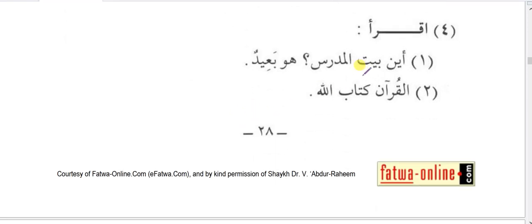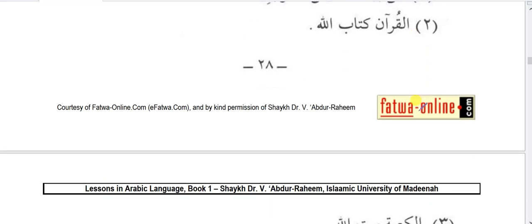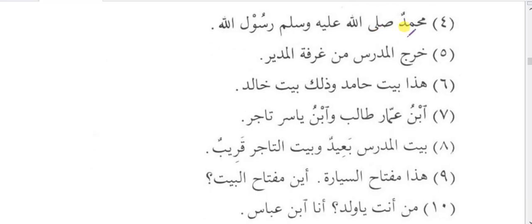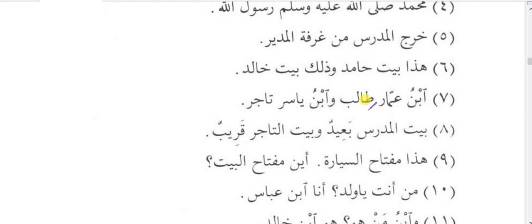More reading sentences: ayna bayitul-mudarrisi — where is the teacher's house? Huwa ba'idun — it is far. Al-Quranu kitabullahi — the Quran is the book of Allah. Al-Ka'batu baytullahi — the Kaaba is the house of Allah. Muhammadun sallallahu alayhi wa sallam rasoolullahi — Muhammad, peace be upon him, is the messenger of Allah. Kharaja al-mudarrisu min ghurfati mudiri — the teacher left from the principal's room. Haza baytu hamidin — this is Hamid's house; wa dhalika baytu khalidin — and that is Khalid's house.